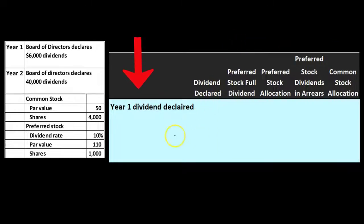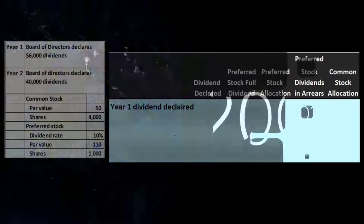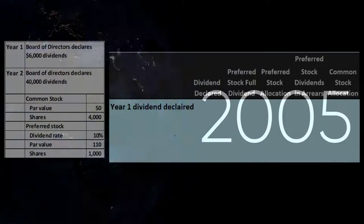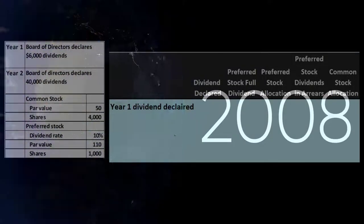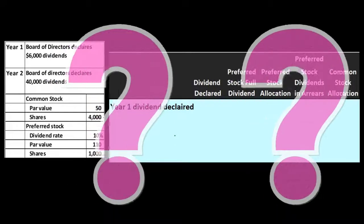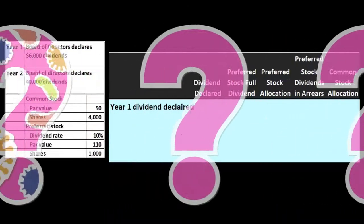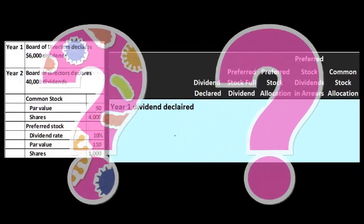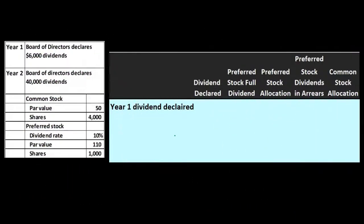We're going to do this in a table format because we want to see what happens over time, year to year. We're not going to record journal entries here. We're just going to say here are the distributions in year one, here are the distributions in year two — who gets the money, who's better off?